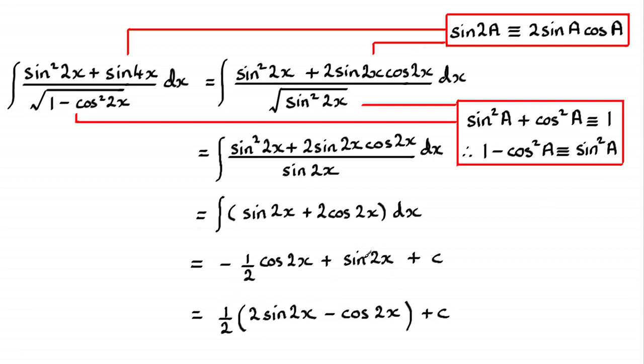And then for this term, it becomes 2 sin 2x. And for this last term, I've got minus cos 2x. So there we go.